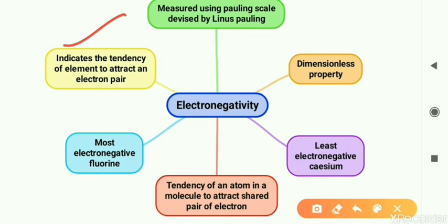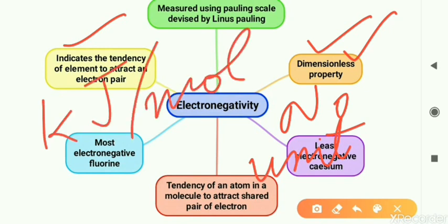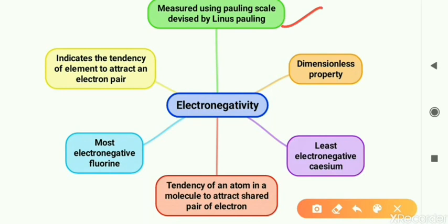This property indicates only the tendency of the element to attract the electron pair, because no measurement of energy — no energy lost or released — is done, unlike ionization energy or electron affinity. That is why electronegativity is called a dimensionless property, meaning it has no unit. In electron affinity we have units of kilojoules per mole or electron volts per atom, but here no measurement of energy is involved. To compare different atoms, we use the Pauling scale developed by Linus Pauling, which ranks elements in order of electronegativity.